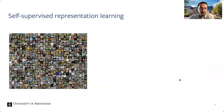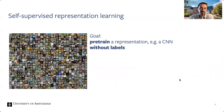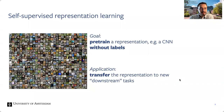We want the data to provide a supervisory signal, replacing the manual annotations — this we call self-supervision. One of the main goals is to learn visual representations: models that take some visual input such as an image or video and yield a vector which retains important information, making them useful for a variety of downstream tasks. Having such a pre-trained representation allows you to learn much quicker using a lot less data.